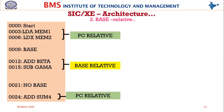Base-relative addressing must be specified explicitly using the assembler directive BASE in the program. If that is not there, it is assembled using PC-relative addressing mode. BASE and NOBASE assembler directives are mandatory to use base-relative addressing. Instructions at 003 and 006 are assembled using PC-relative because the BASE assembler directive appears after that at 009. Instructions at 002 and 0015 will be assembled using base-relative because they are enclosed between the BASE and NOBASE directives.